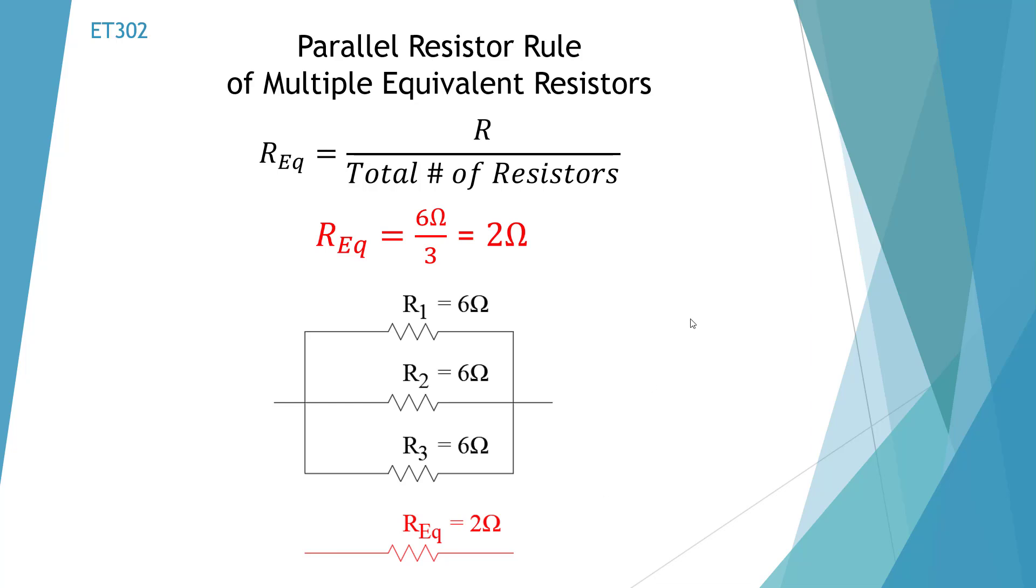So these parallel rules that I've shown will help you in solving these but it'll also shorten the time of doing troubleshooting. Because many times in troubleshooting we just need to get a ballpark idea of what the resistance is so we could continue with our troubleshooting. So we could use our smallest rule and we could use these multiple parallel resistor rules in order to do troubleshooting and to simplify our analysis.